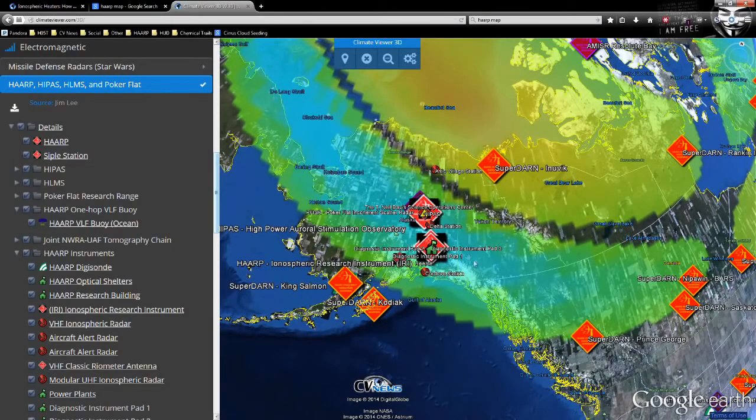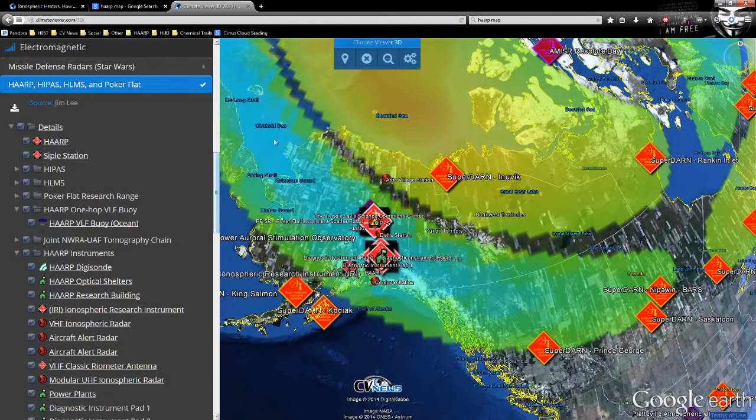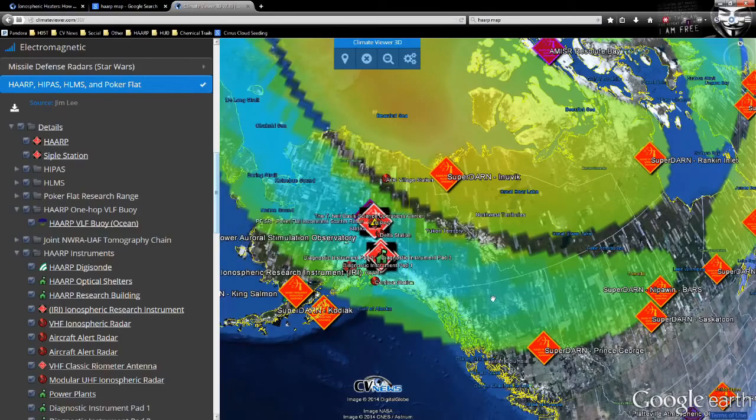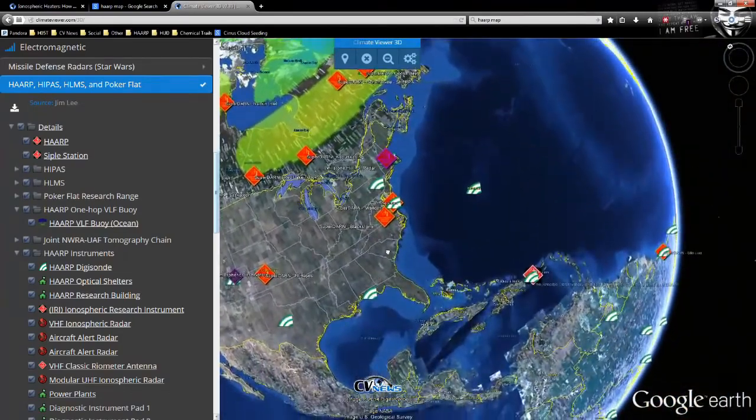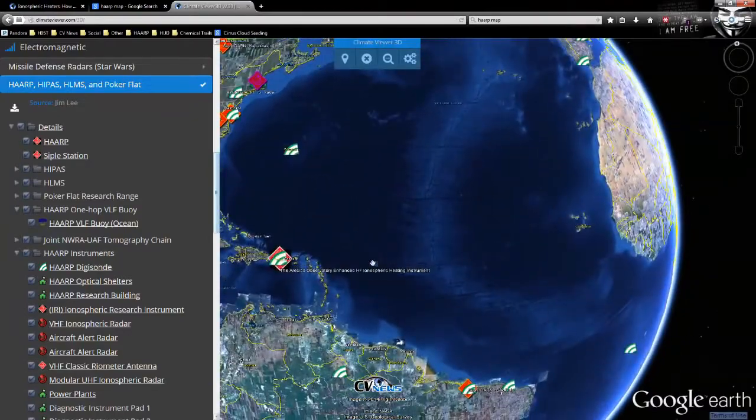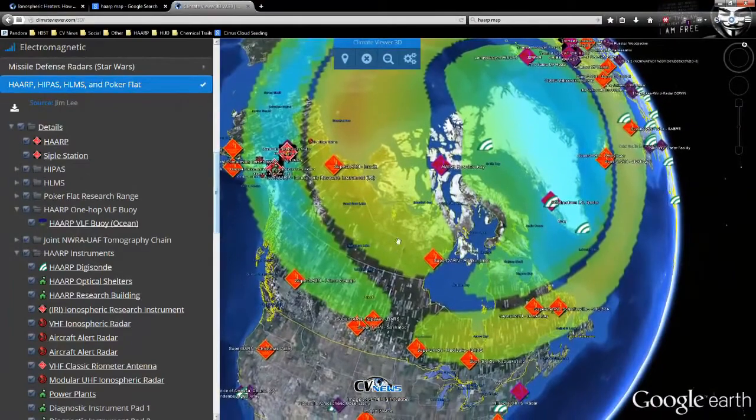So, the reason why they don't need HAARP anymore is because they're not even going to do polar electrojet heating anymore. They found a better way. And the reason they found a better way, the reason why these are at the equator now is because of that better way.